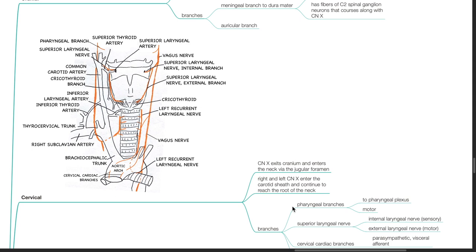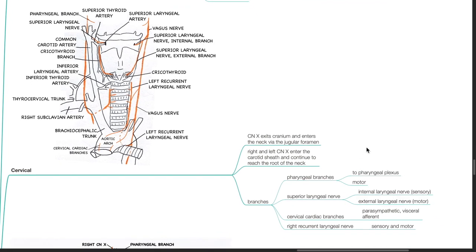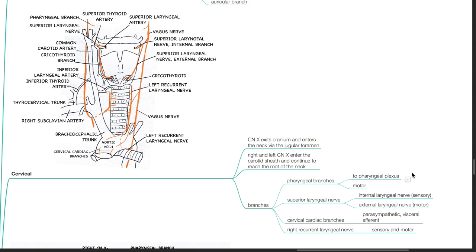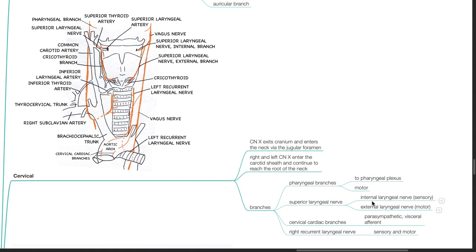The cervical division: the vagus nerve exits the cranium and enters the neck via the jugular foramen. Right and left cranial nerve 10 enter the carotid sheath and continue to the root of the neck. Branches here include the pharyngeal branch to the pharyngeal plexus, which is motor; the superior laryngeal nerve, which divides into the internal laryngeal nerve (sensory) and the external laryngeal nerve (motor); cervical cardiac branches, which are parasympathetic visceral efferent; and the right recurrent laryngeal nerve, which is sensory and motor.